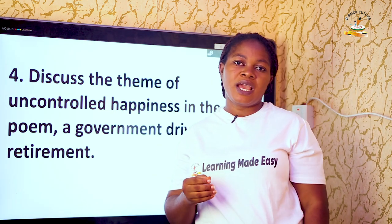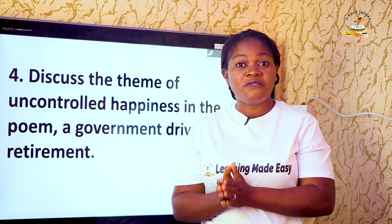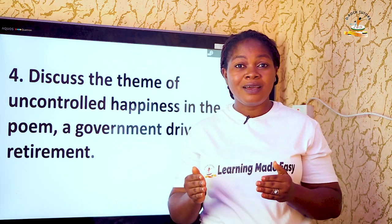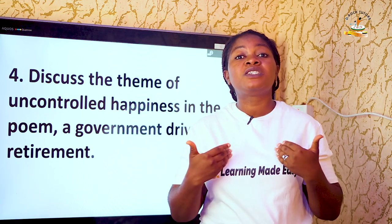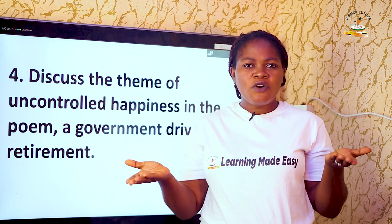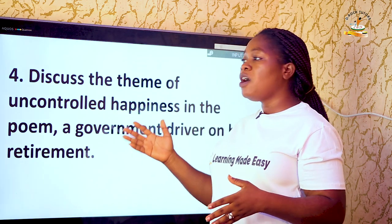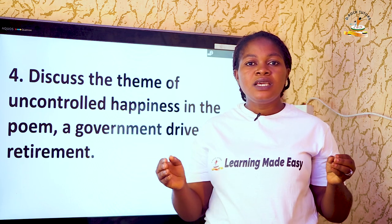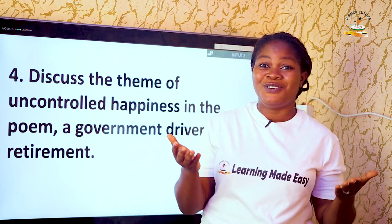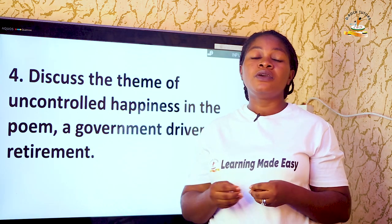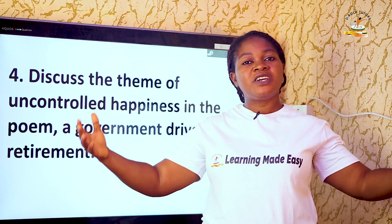Now question four: 'Discuss the theme of uncontrolled happiness in the poem A Government Driver on His Retirement.' Imagine a man who has worked for 35 years as a government driver without a single accident — and then on the day of his retirement, he drove himself to his own death. On that day he was given a car as a reward for his faithful service, and he called his friends and family to celebrate.